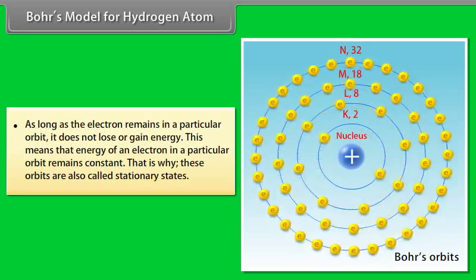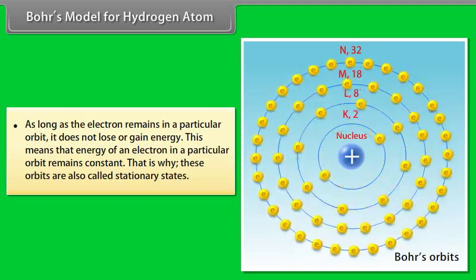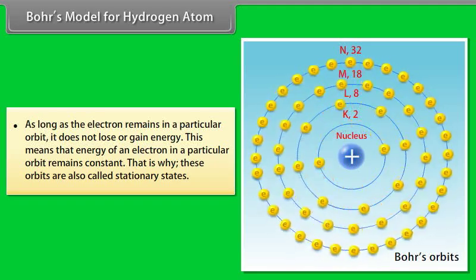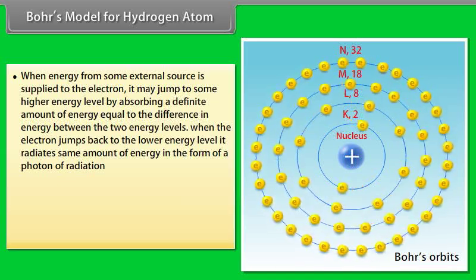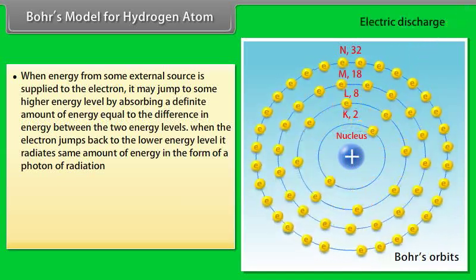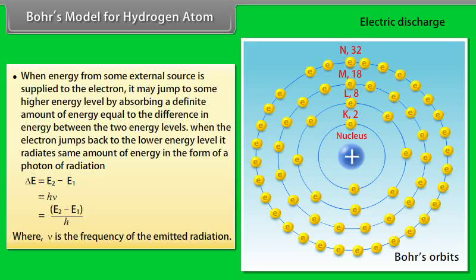As long as the electron remains in a particular orbit, it does not lose or gain energy; the energy remains constant, which is why these orbits are called stationary states. When energy from an external source is supplied, the electron jumps to a higher energy level by absorbing a definite amount of energy equal to the difference between the two energy levels. When the electron jumps back to the lower energy level, it radiates the same amount of energy as a photon: ΔE = E₂ − E₁ = hν, so ν = (E₂ − E₁)/h.